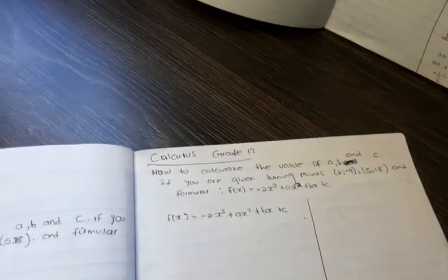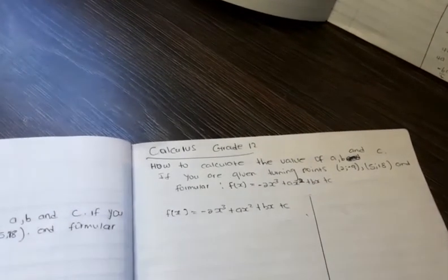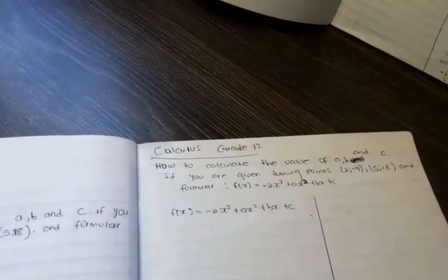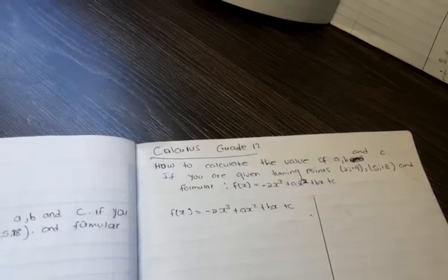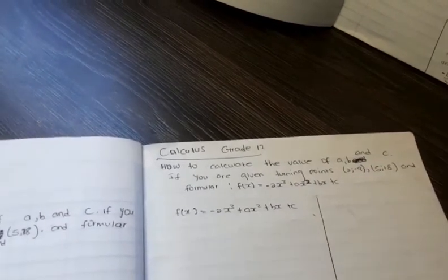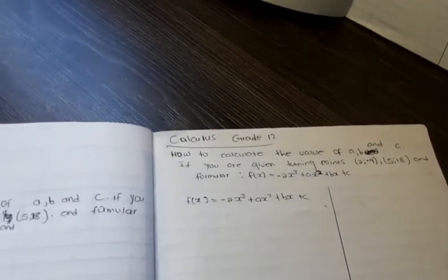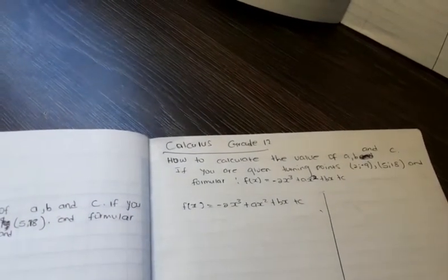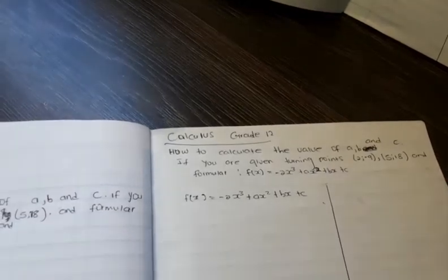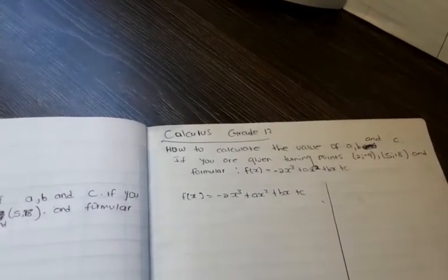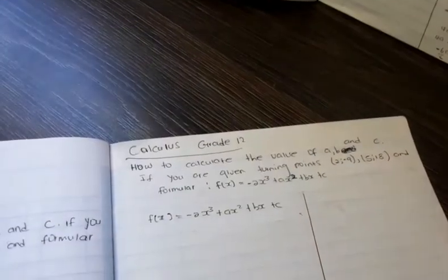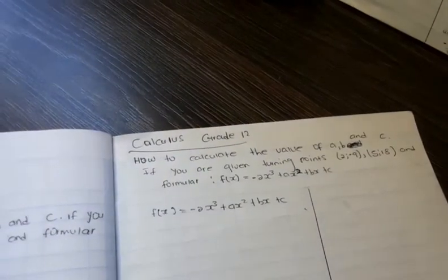If you are given the turning points to be (2, -9) and (5, 18), and a formula F(x) = -2x³ + Ax² + Bx + C.